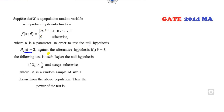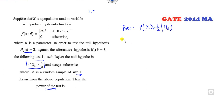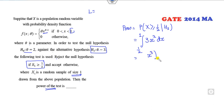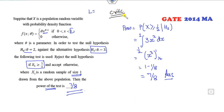Question 10: The critical region is already given as X ≥ 1/2. Sample size is 1. Power = P(X ≥ 1/2 | H₁: θ = 3). Under H₁, f(x) = 3x² for 0 < x < 1. Power = ∫_{1/2}^1 3x² dx = [x³]_{1/2}^1 = 1 − 1/8 = 7/8. Remember: if the critical region is given, start directly from the power calculation; no need to apply the most powerful test.